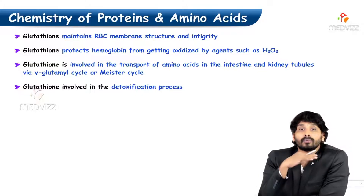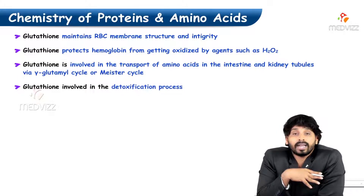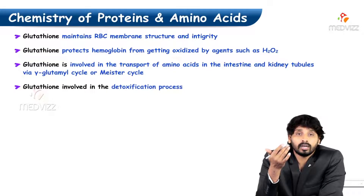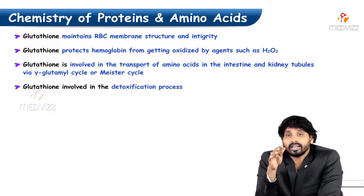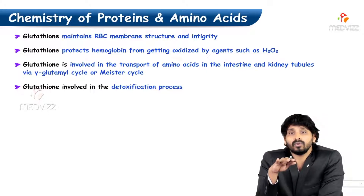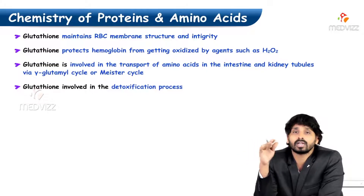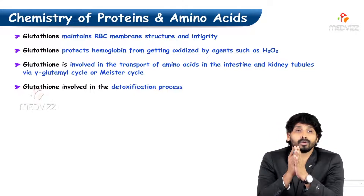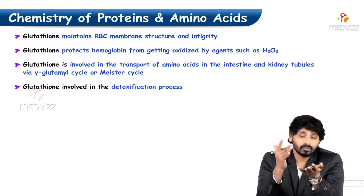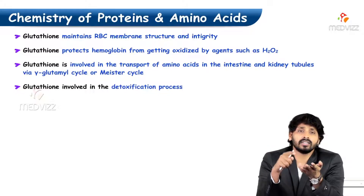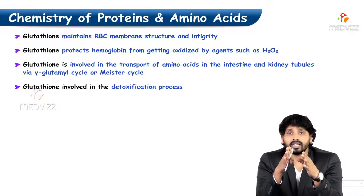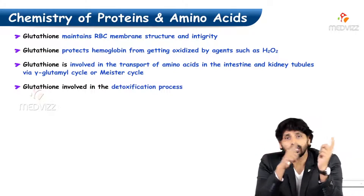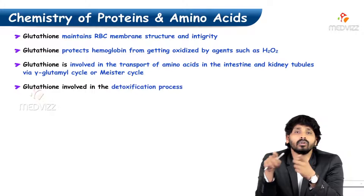Glutathione protects hemoglobin from getting oxidized by agents such as hydrogen peroxide. It protects the hemoglobin inside the RBC from attack by hydrogen peroxide, converting the harmful hydrogen peroxide into water molecules. Glutathione is also involved in the transport of amino acids in the intestine and kidney tubules, transporting amino acids like glycine and cysteine. If this cycle is not taking place, there is loss of cysteine and glycine along with other amino acids in the urine, leading to aminoaciduria.